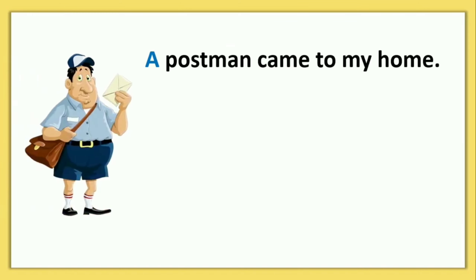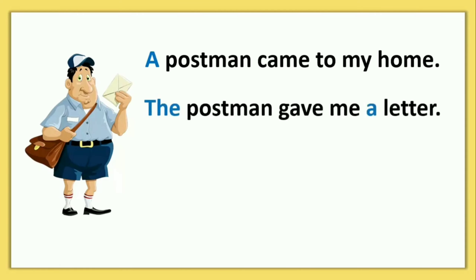जैसे sentence देखें: A postman came to my home — एक postman मेरे घर पे आया। Postman के बारे में हम first time discuss कर रहे हैं, और postman, P से start हो रहा है, मतलब consonant से, इसलिए A use करेंगे। The postman gave me a letter — उसी postman के बारे में दुबारा बता रहे हैं तो THE, और letter के लिए first time है और L consonant है, इसलिए A letter।